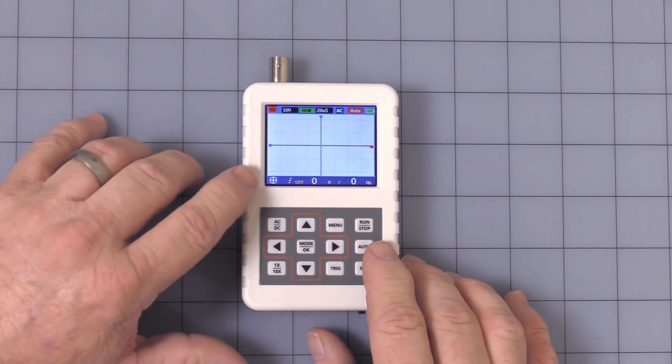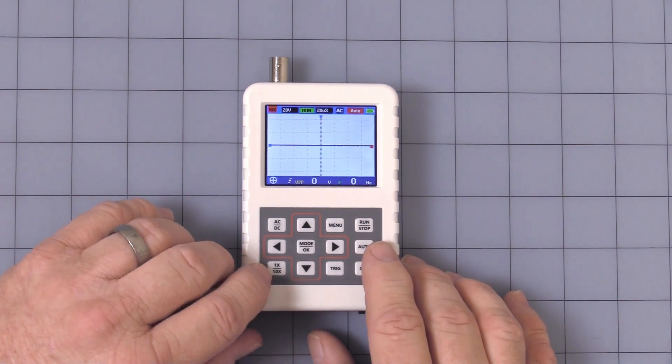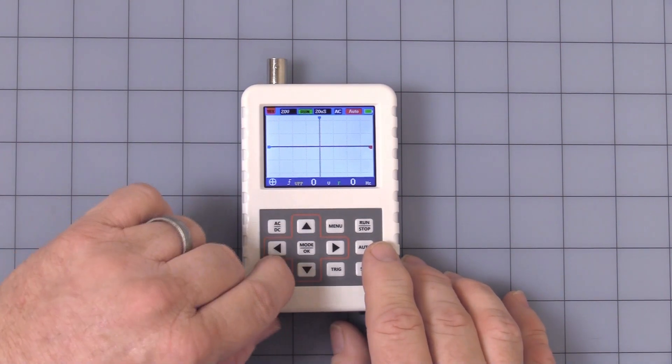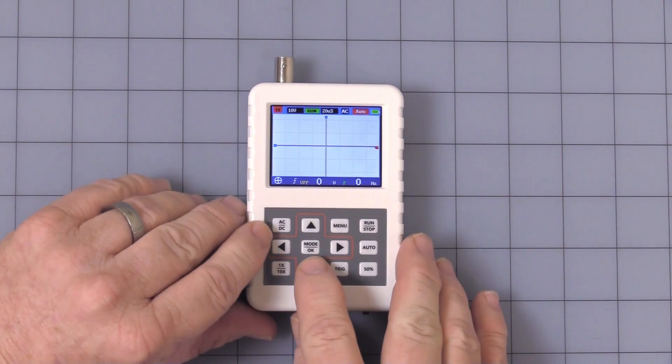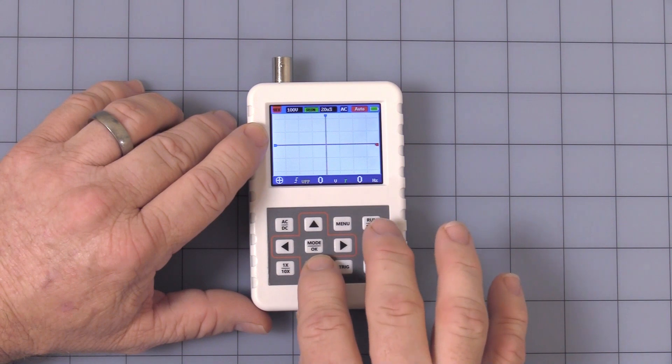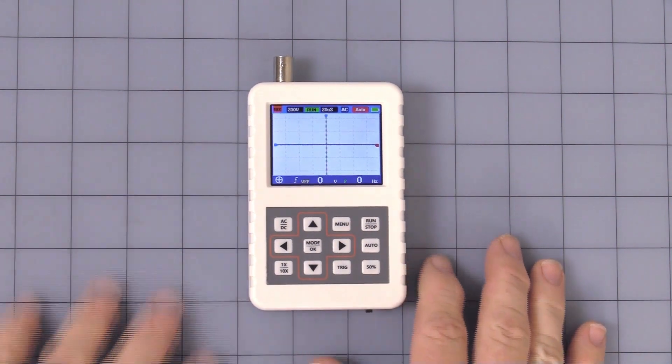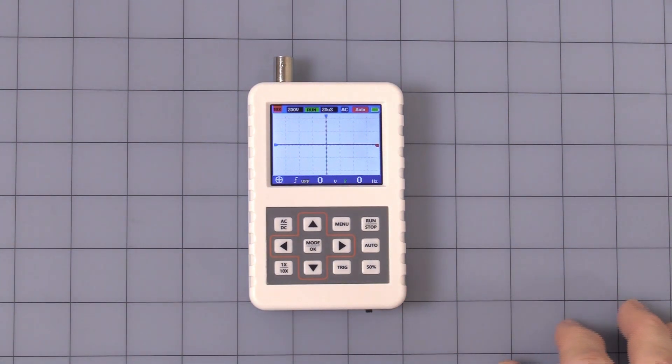In 1X you got just 10 volt per division. Under 1X maximum 10 volts. Change it over to 10X, it will allow you to get up to 200 volts per division. Just a little added safety. It does not affect the sensitivity of it.